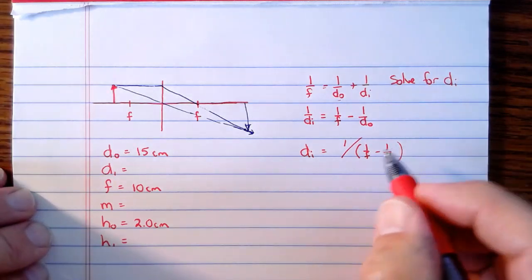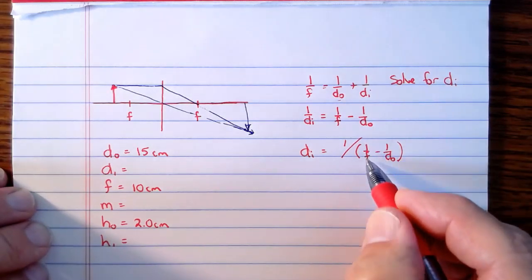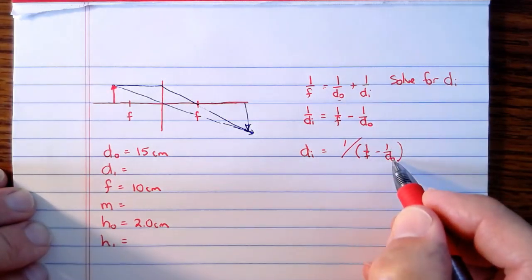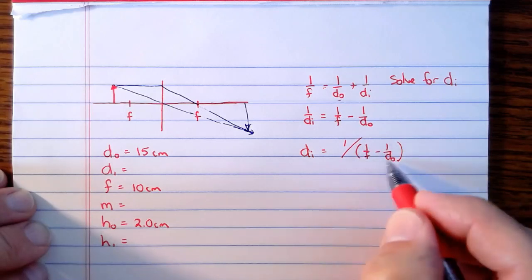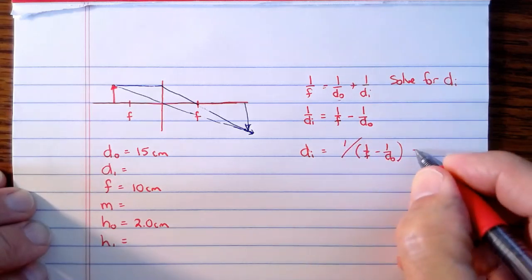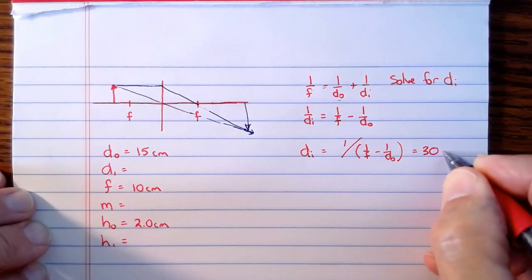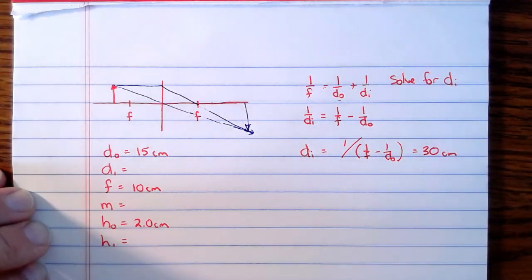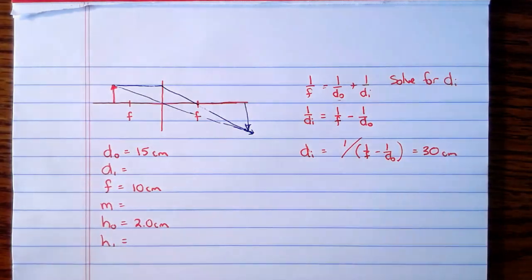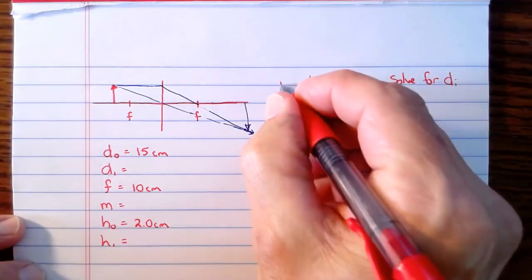The distance to the image itself is actually 1 over this whole mess: 1 over F minus 1 over the distance to the object. So you can kind of use that as a template to help you solve the problems. We can plug in our numbers now. You take 1 over F, so that's 1 over 10 minus 1 over 15, and whatever answer you get from that, you take 1 over it, and it turns out this equals 30 centimeters. So the distance to the image, we have found out, is 30 centimeters. So that was step 1.